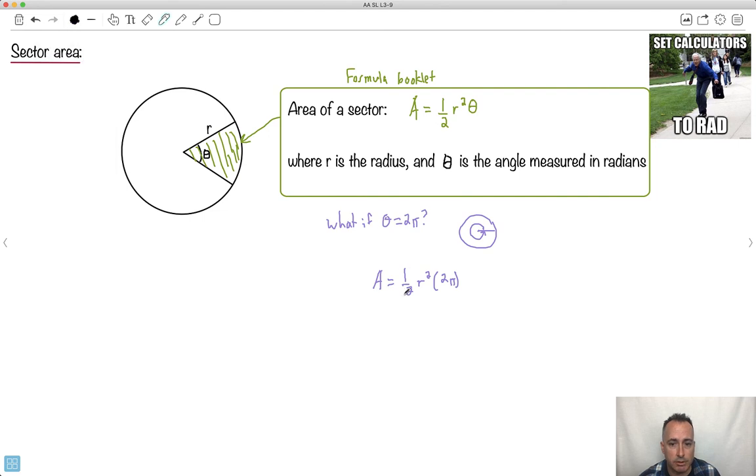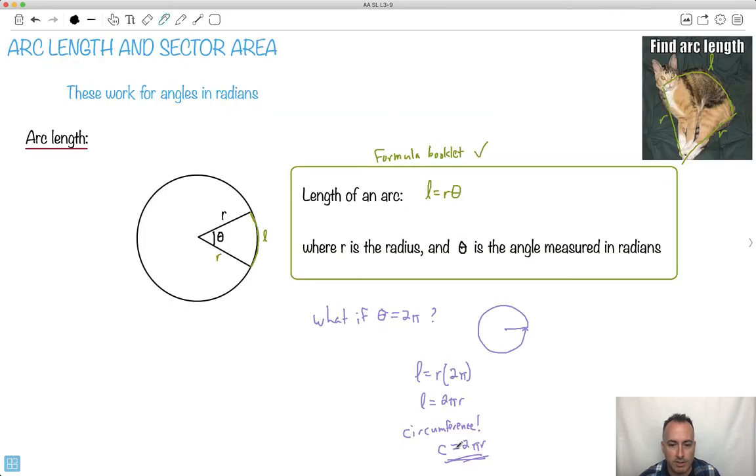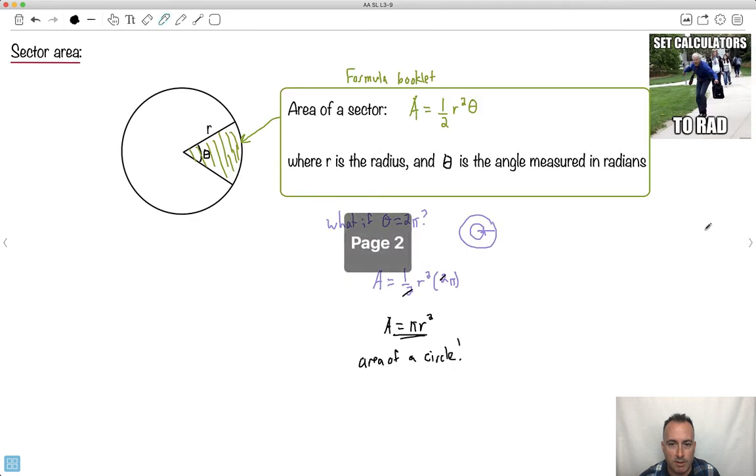Let's take a look here. The 2's will cancel out. And I have pi times R squared. Hey, I get the area is pi R squared. That's the area of a circle. So see how we can sort of recover some of these things that we've seen before. So the area of a circle and also the circumference of a circle. Those are things we kind of just recover by making the special case of the angles all the way around.